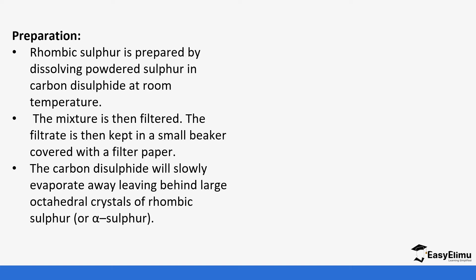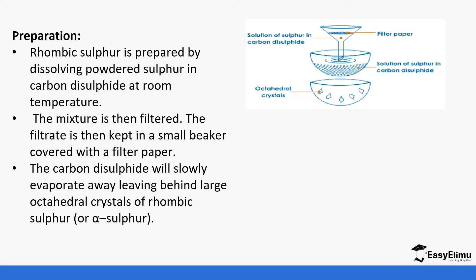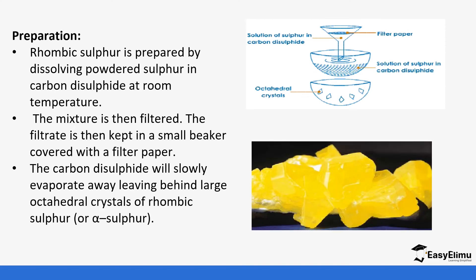Because rhombic sulfur dissolves in carbon disulfide, it is possible to add carbon disulfide and the sulfur will dissolve. In the lab setup, carbon disulfide is added to sulfur and the mixture is allowed to cool slowly so that crystals can form through evaporation of the carbon disulfide. These are the crystals that form.